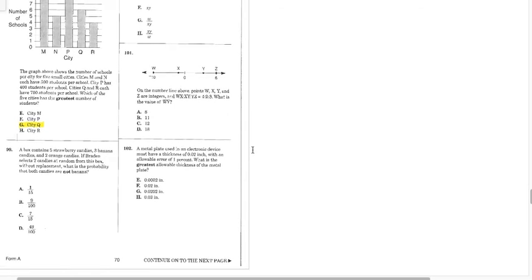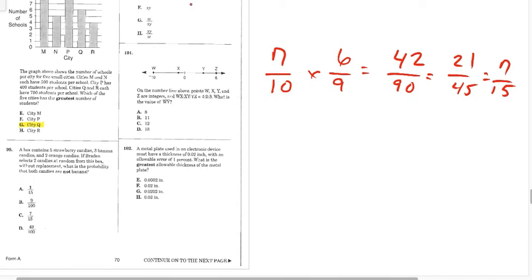Okay. 99. A box contains 5 strawberry, 3 banana, and 2 orange. Brandon selects 2 from the box without replacement. Both candies are not bananas. So, bananas are 3. So, we have 7 out of 10 times 6 out of 9. 42 over 90, which is 21 over 45, and 7 over 15. There it is.